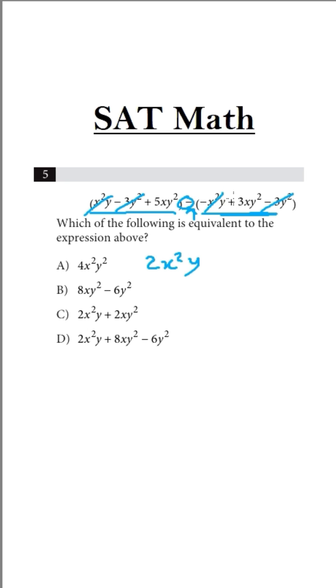And then we have 5xy squared, and this will become minus times plus, that is minus 5xy squared. So 5xy squared minus 3xy squared, this will become 2xy squared, that is plus 2xy squared. So our answer will be twice C.